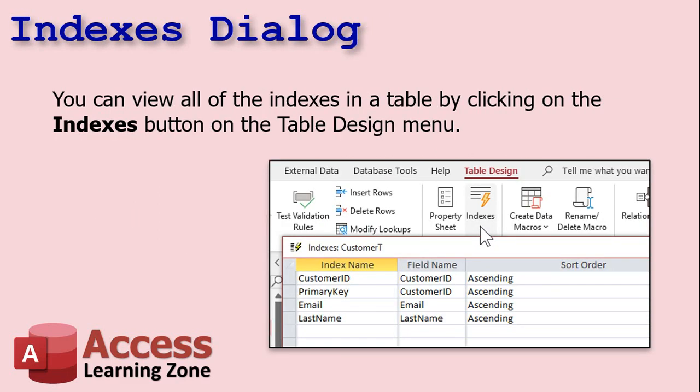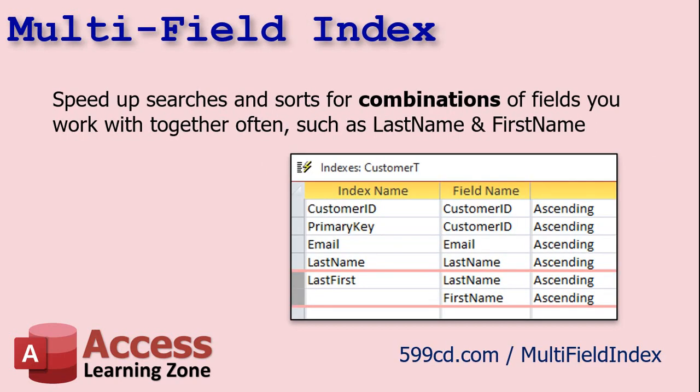There's an Indexes dialog box. You can view all of the indexes in a table by clicking the Indexes button on the table design menu. In here, you can create something called a multi-field index, which is rare, but I use them once in a while. Let's say you routinely search or sort based on last name and first name together — Smith, Joe, for example. Creating a multi-field index means your database has an index built containing those two fields together, so it doesn't have to search through two separate index tables. This only really makes sense with a huge database, but it can greatly improve performance. I've got a separate video on building a multi-field index — I'll put a link down below.